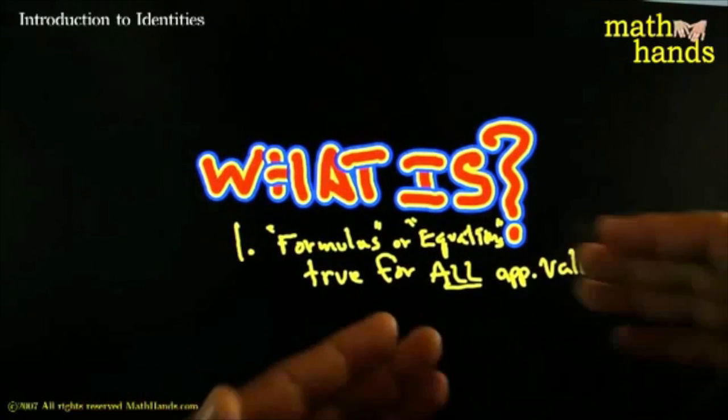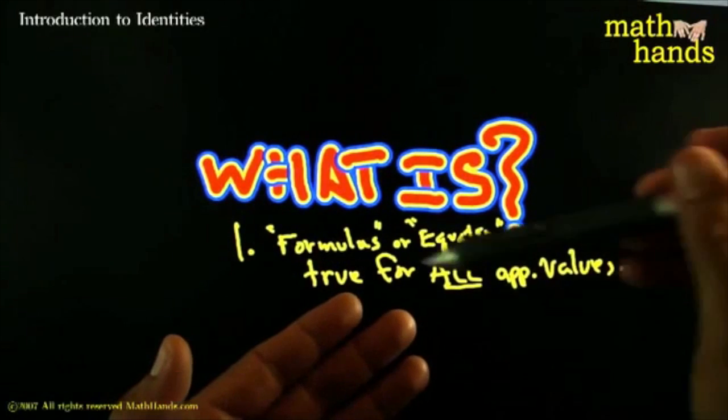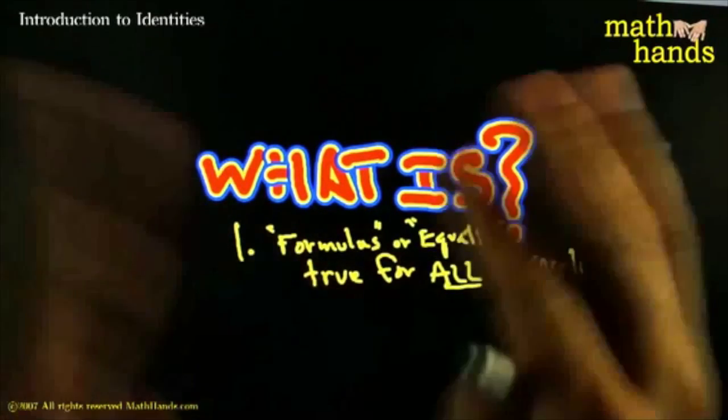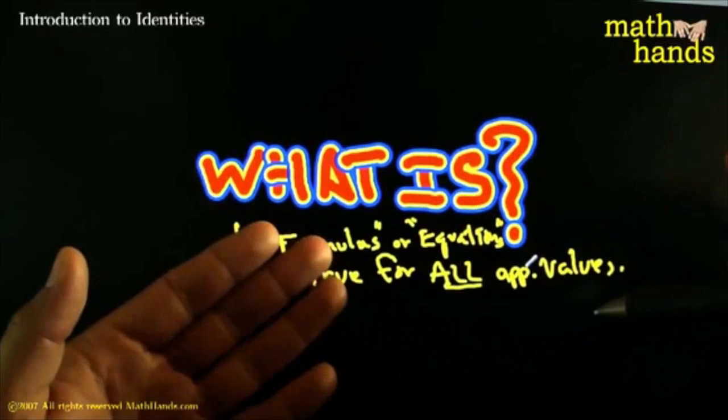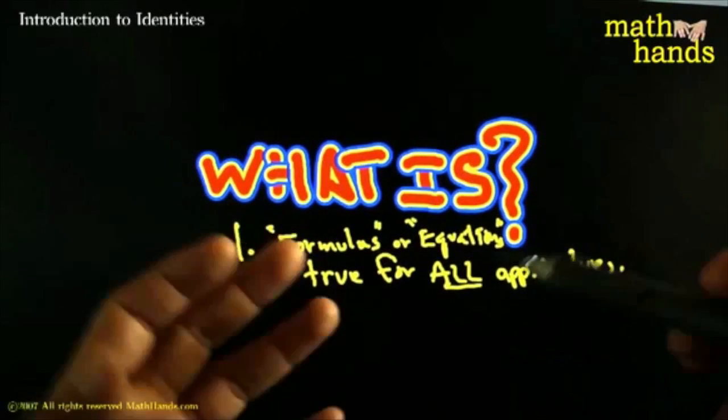So one way to interpret these identities is that they are formulas or equations that are true for all applicable values. For all applicable values. What this means is that usually they'll have variables. The equations or formulas will have variables. And the equations are true no matter what the value of the variable you put in there.